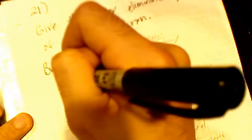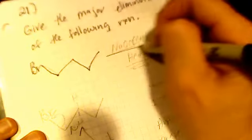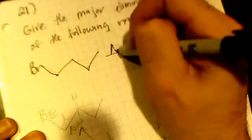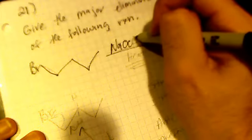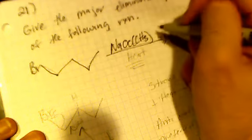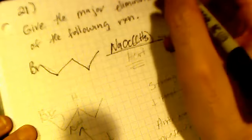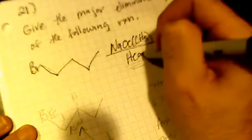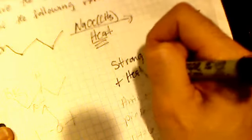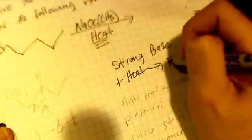So bromine, right, and it's attached to NaOC(CH3)3. That's sodium tert-butoxide, and there's heat, important. So strong base plus heat equals elimination E2.